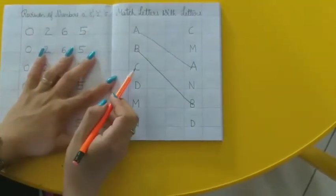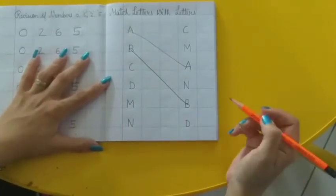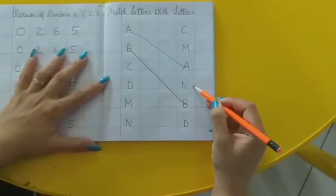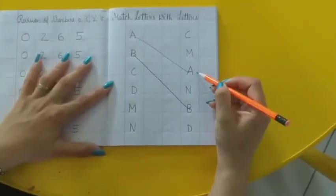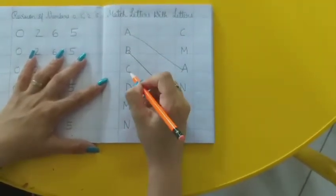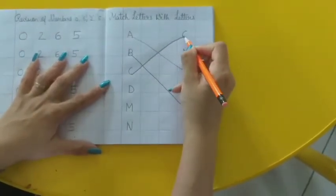Now the next letter, C. C kithar hai, doonndo? Yeh? No. No, this is B. Yeh toh N hai. Yeh A hai. Yeh M hai. Yeh, this is C. Toh C ko hum C ke saath match karenge.